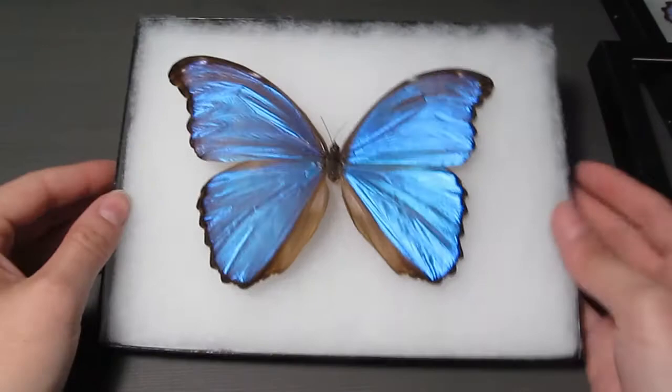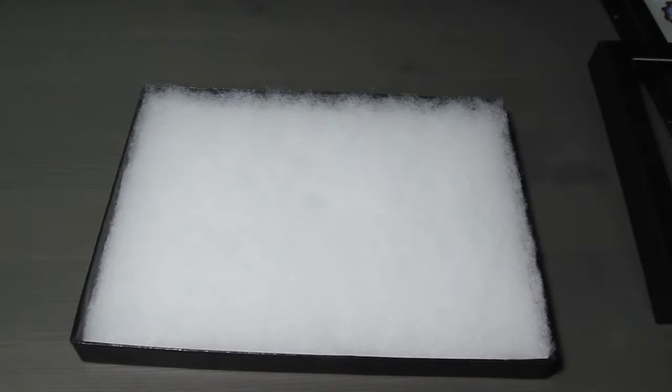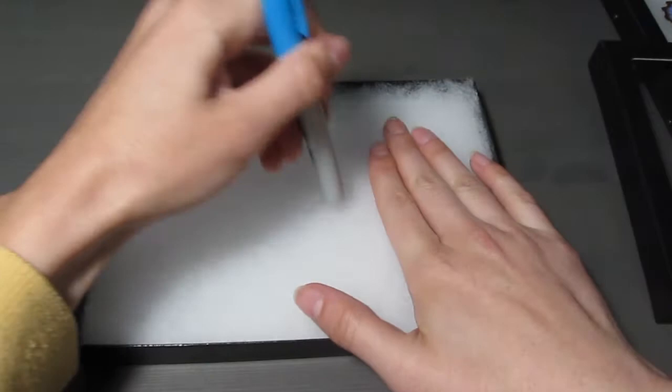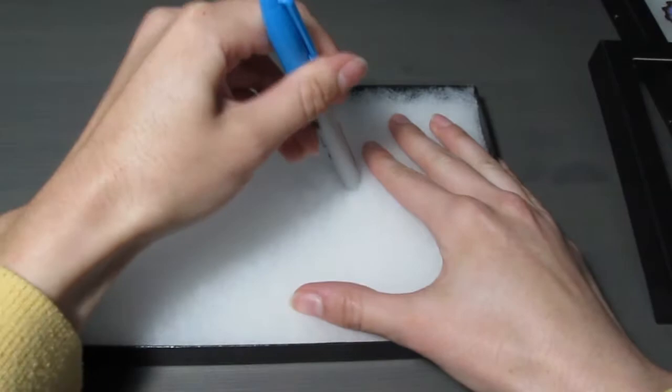With the back end of a marker or a similar tool, press down to create a slight indentation. If your butterfly has antenna, you'll also want to press down the cotton where the antenna will lay. I repeat this motion several times until the indentation is the right size and depth. Since this butterfly's body is small, the indentation is very slight, as you can see here.